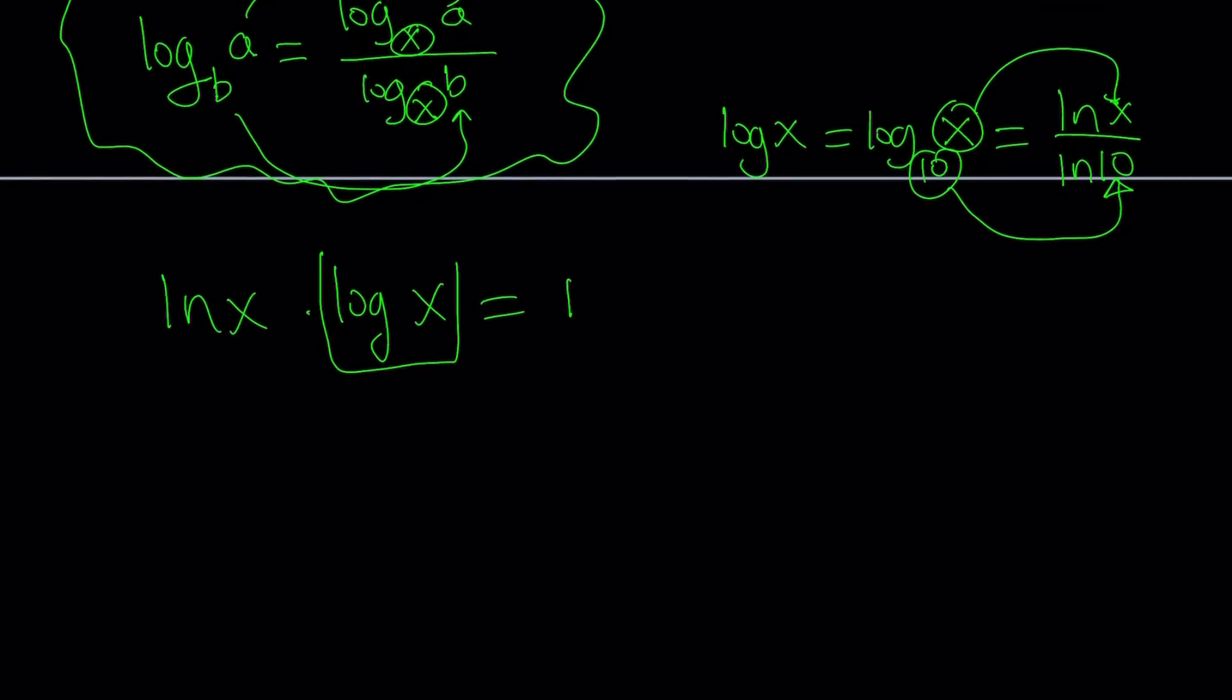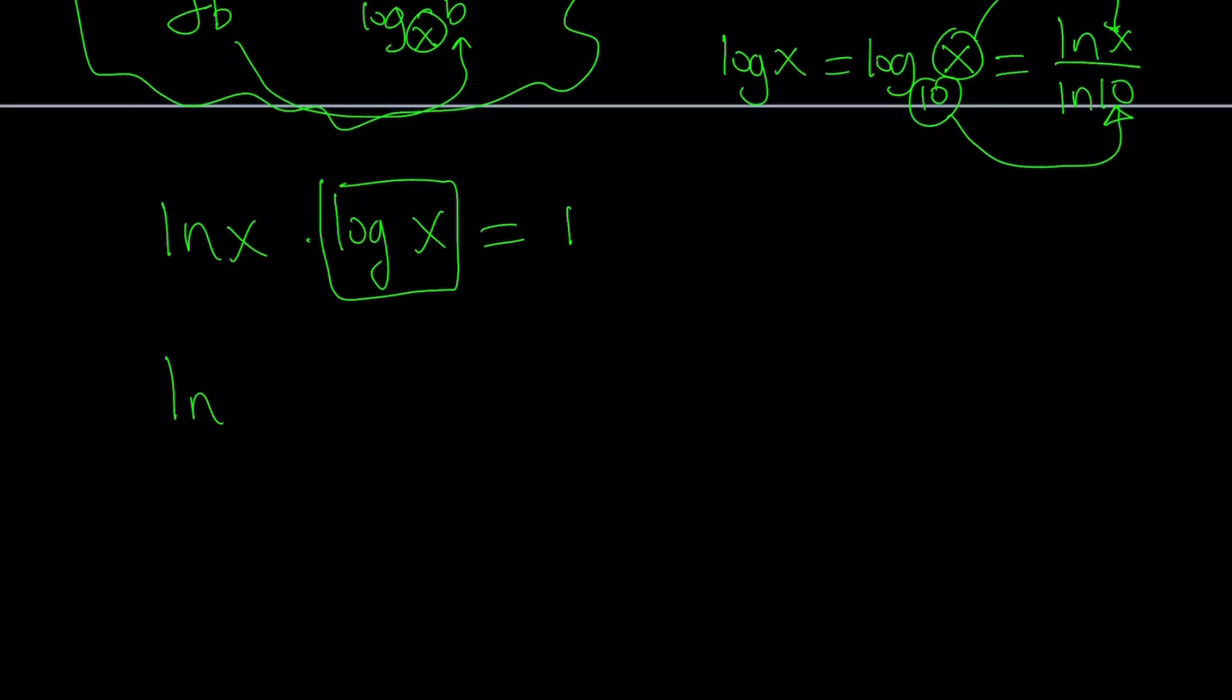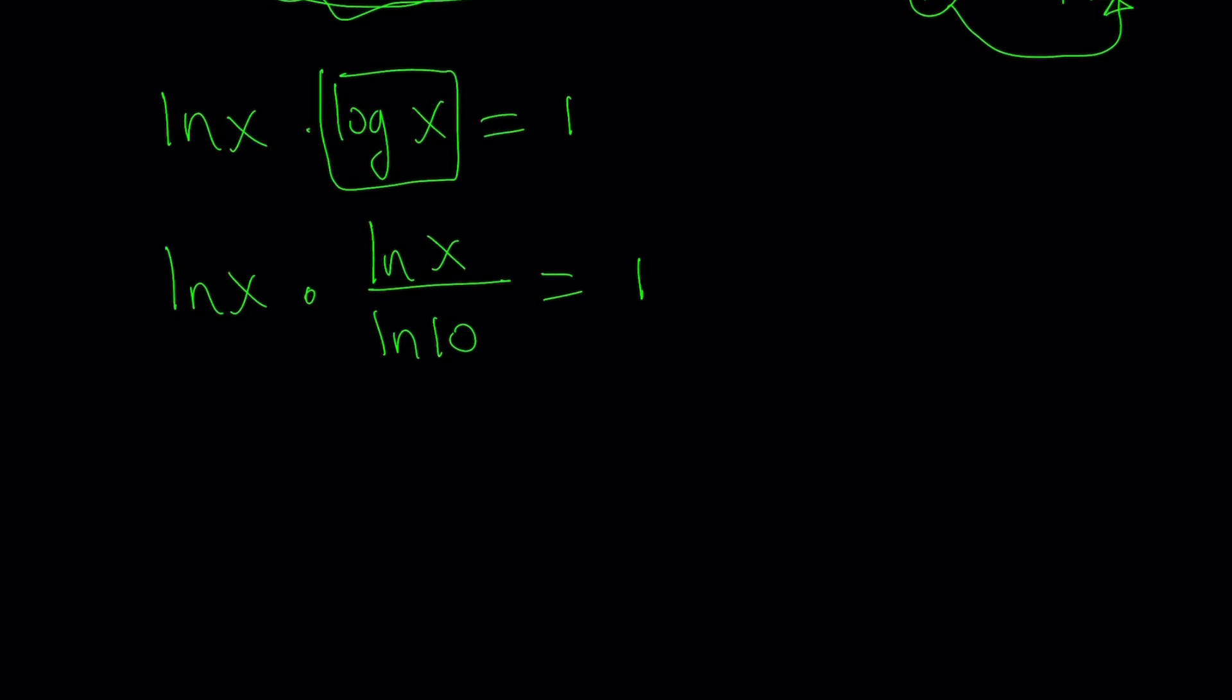Replace log x with that: ln x multiplied by ln x over ln 10. Now, what's really cool about it is that ln 10 is a constant. It's not a variable. That's good, because 10 is a constant, right? So ln of 10 is constant. And we have the same base now, ln x times ln x, which is really cool. So let's cross multiply. ln x times ln x is going to be ln x squared. Cross multiplying gives us ln 10 times 1.